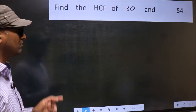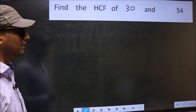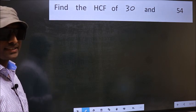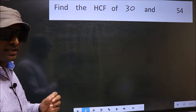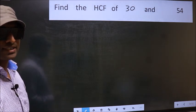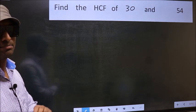Find the HCF of 30 and 54. To find the HCF, we should do the prime factorization of each number separately.